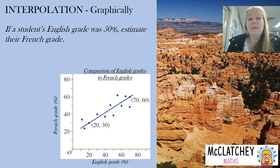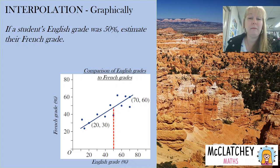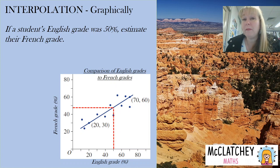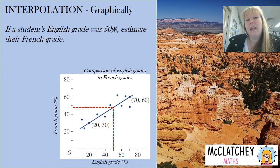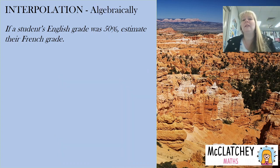Let's use interpolation with a graph. We have a student's English grade of 50 percent and we want to estimate their French grade. Using a ruler, take from 50 percent on the x-axis and draw a line vertically up to the line of best fit, then annotate across to the y-axis and note the coordinates of the intersection point. From the graph, if a student's English grade is 50 percent, their French grade is approximately 48 percent.